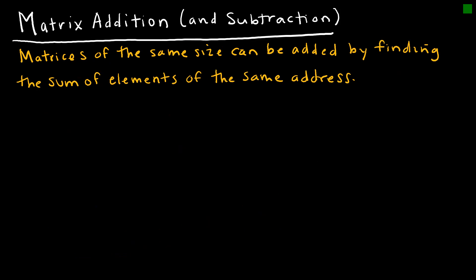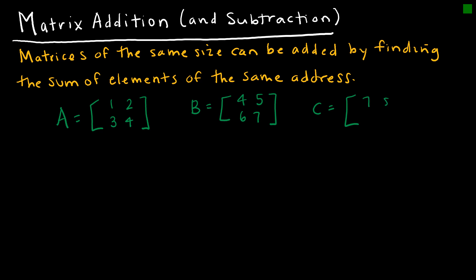We're going to talk about matrix operations, and the first is matrix addition, which is basically the same concept as subtraction. I'm going to make up a couple of matrices: A = [1, 2; 3, 4], a 2 by 2 matrix; B = [4, 5; 6, 7]; and C = [7, 8, 9; 10, 11, 12].